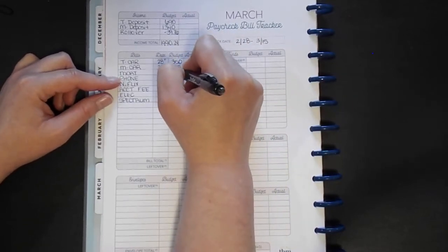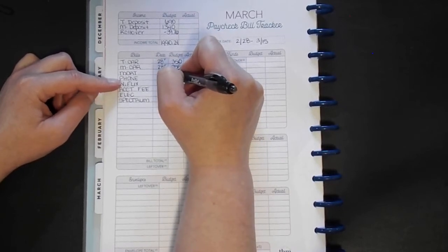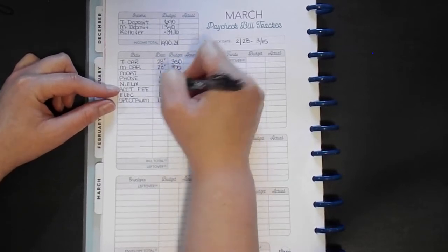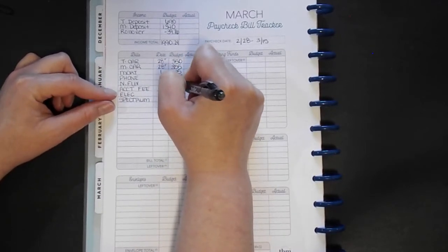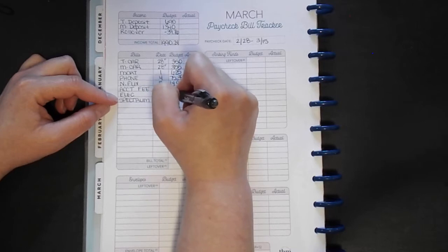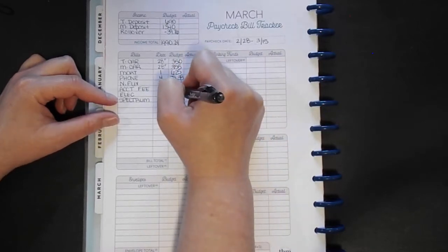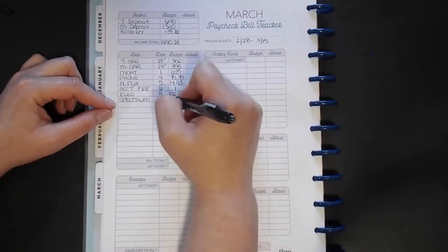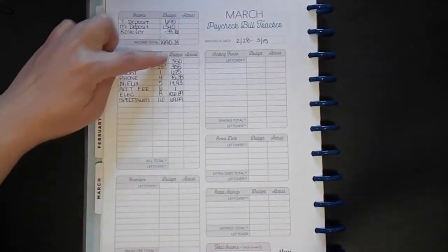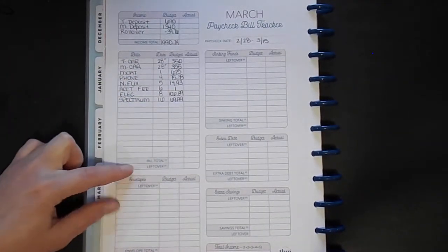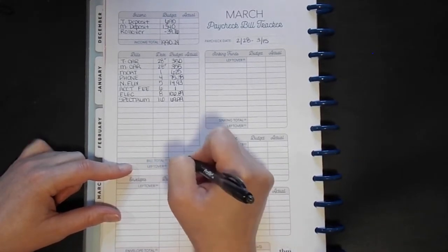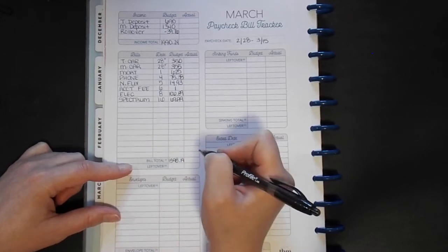Our mortgage is $625. Our phone bill is $75.38. Netflix is $14.93. We have an account fee of a dollar each month. Our electric bill is $106.89, and Spectrum, which is our internet, was $69.99. So if I total all these amounts up, our bills this month were $1,598.19 for the first half of this month, I should say.